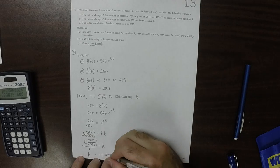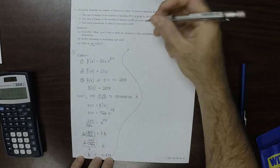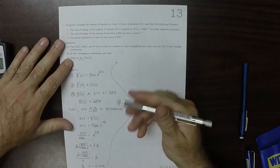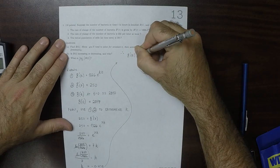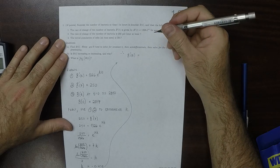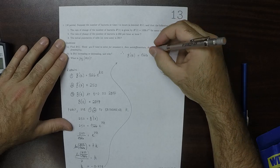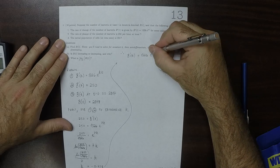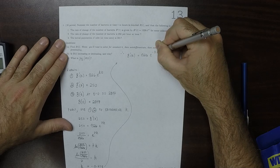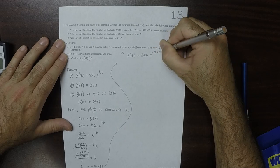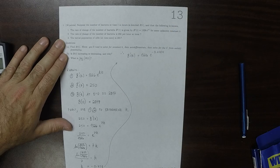So as a result of that, we know that the derivative is 1,326 exponential of negative 0.238 t. Okay, so that's the derivative.